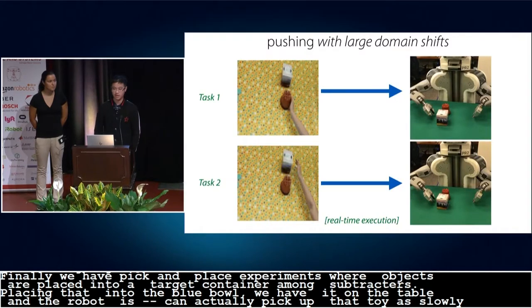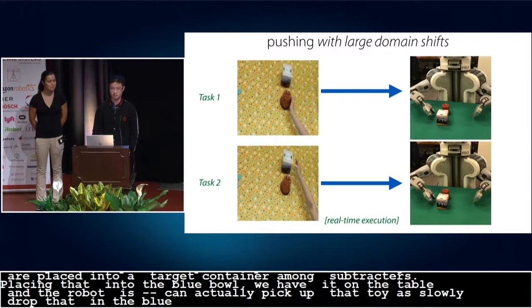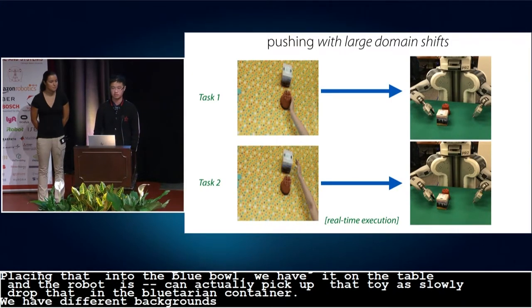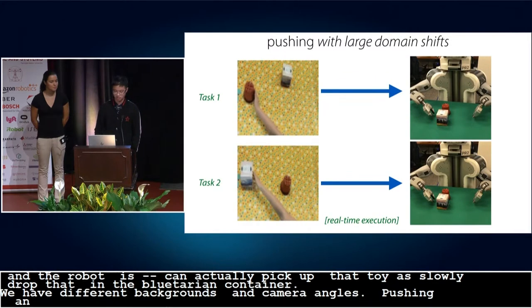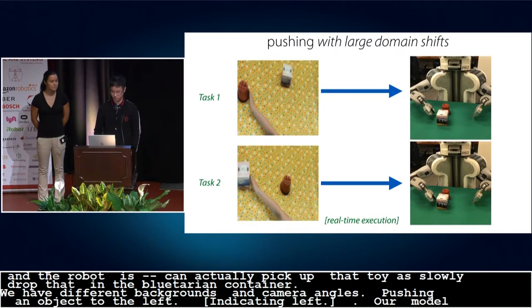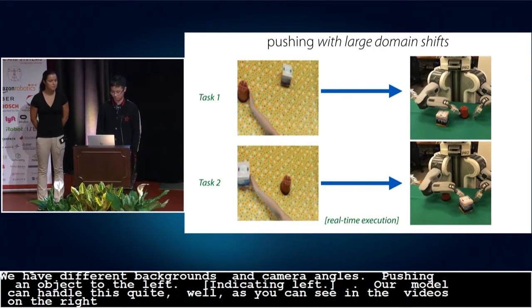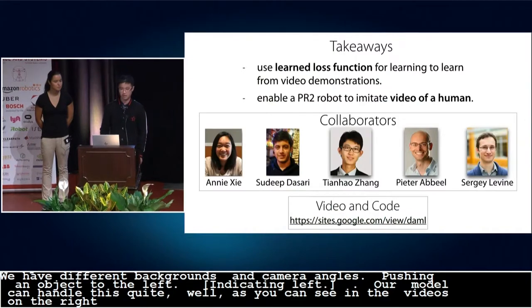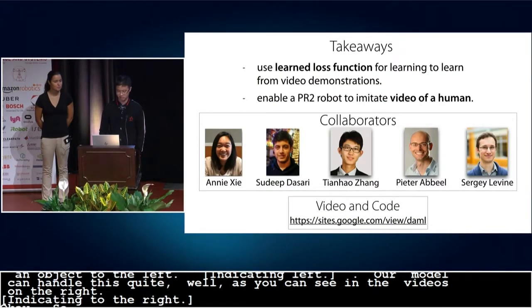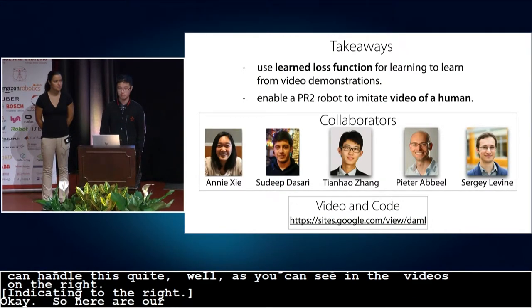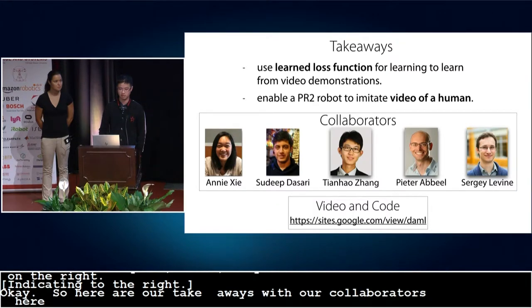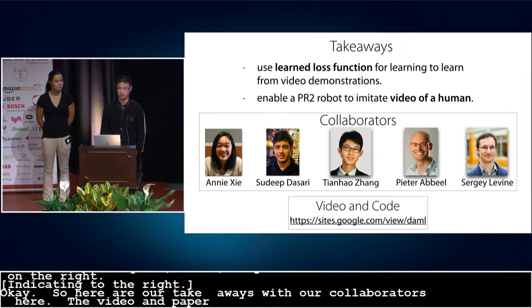So now we show some experiments with larger domain shift. By large domain shift, we mean different backgrounds and different camera angles. On the left, we show videos of a human pushing objects to the left in a yellow background. So our model can handle this large domain shift quite well, as you can see in the videos on the right. Okay, so here are our takeaways. We list our collaborators here. The code and the video of our paper are also available online. Please come to our poster session for more details. Thank you.